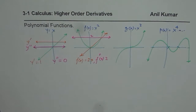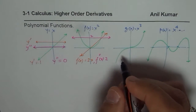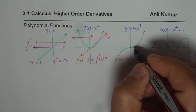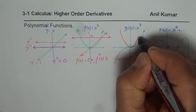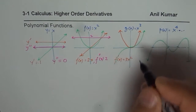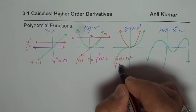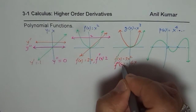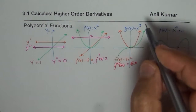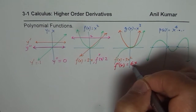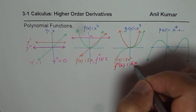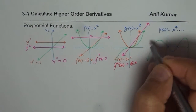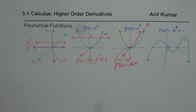Now if I consider the cubic function, f-dash of x will equal 3x squared. Since 3x squared is a parabola, the derivative graph will look like that. The second derivative f-double-dash of x will equal 6x, which is a straight line with a slope of 6 going through the origin. So it is not a constant anymore — it is a straight line.